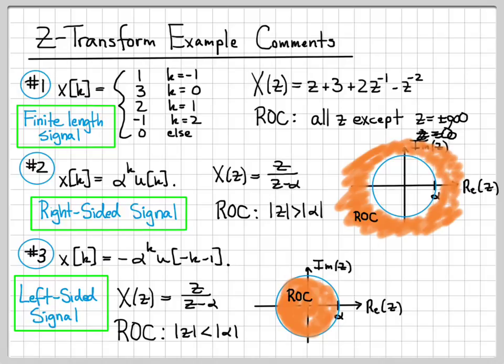You won't know exactly what the radius of the circle is right away, but you will know that when working with right-sided signals it will always be outside of a circle, and when working with left-sided signals it's always going to be inside of a circle. In the next videos, we'll actually mathematically derive why this is true — this has been proof by example, which isn't really a proof, but we'll work through the math showing why this is true.